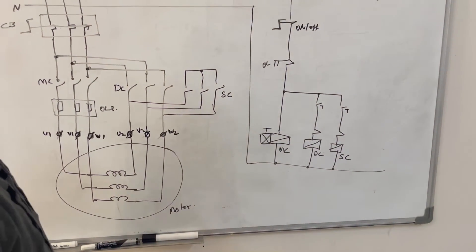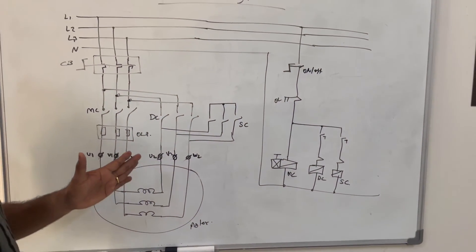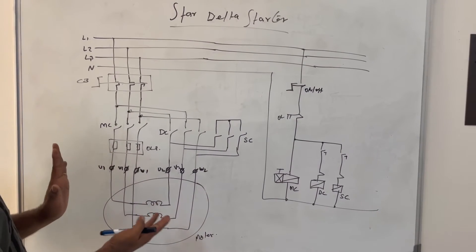So now we will see how we can make star delta starter with only two contactors.